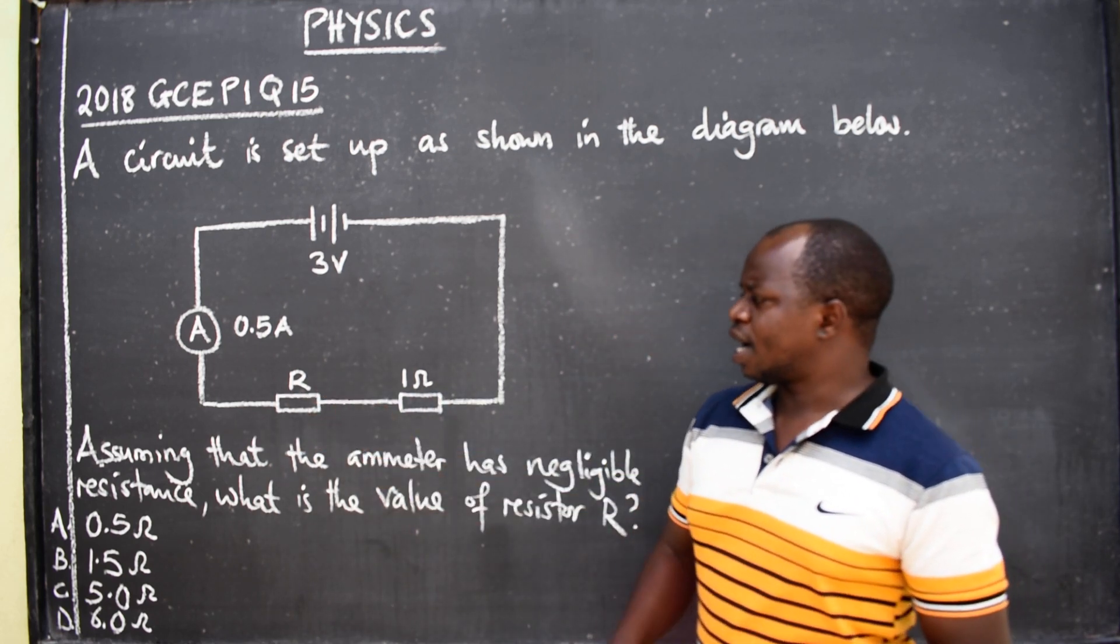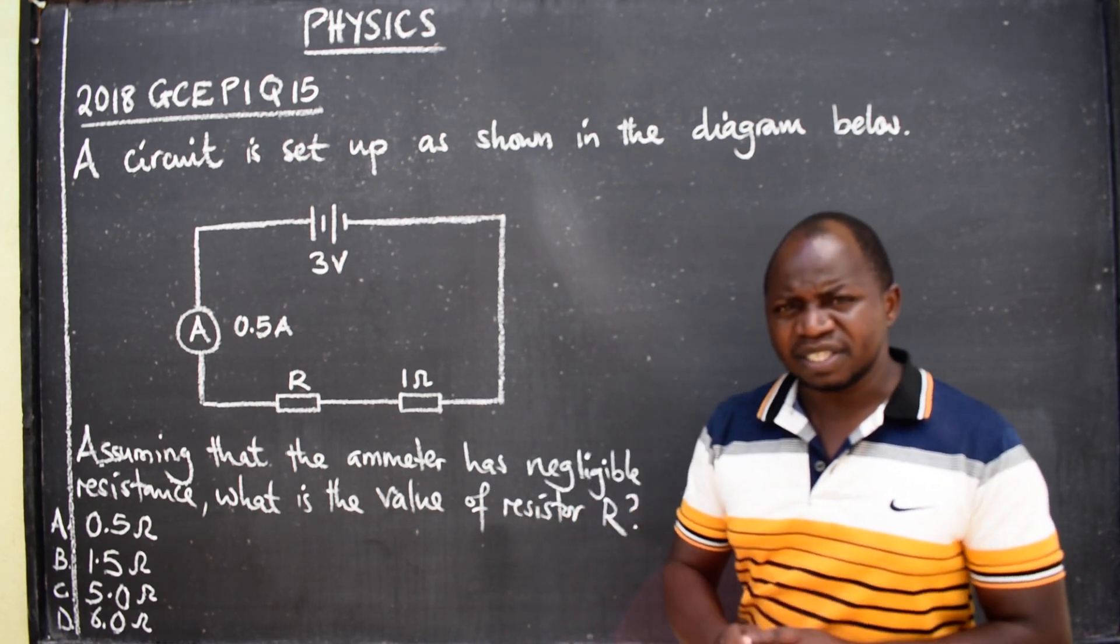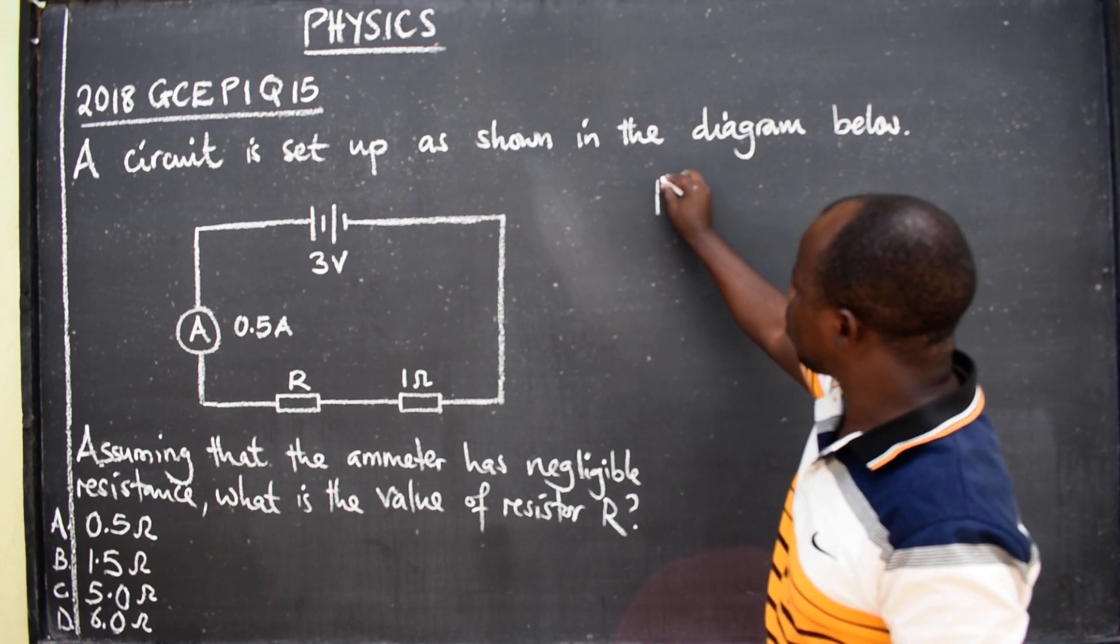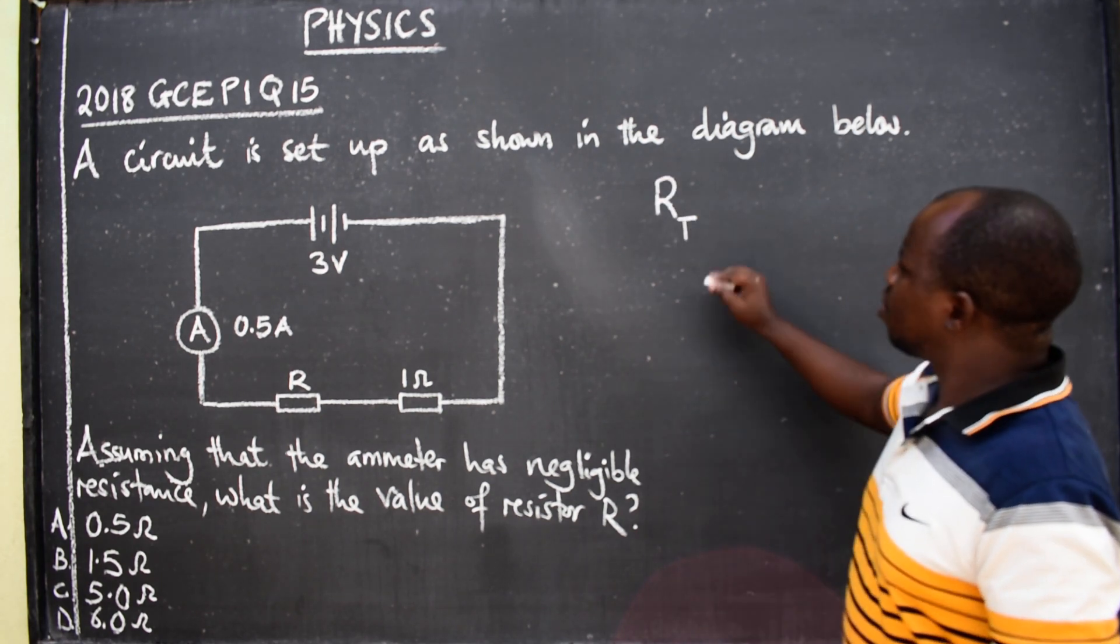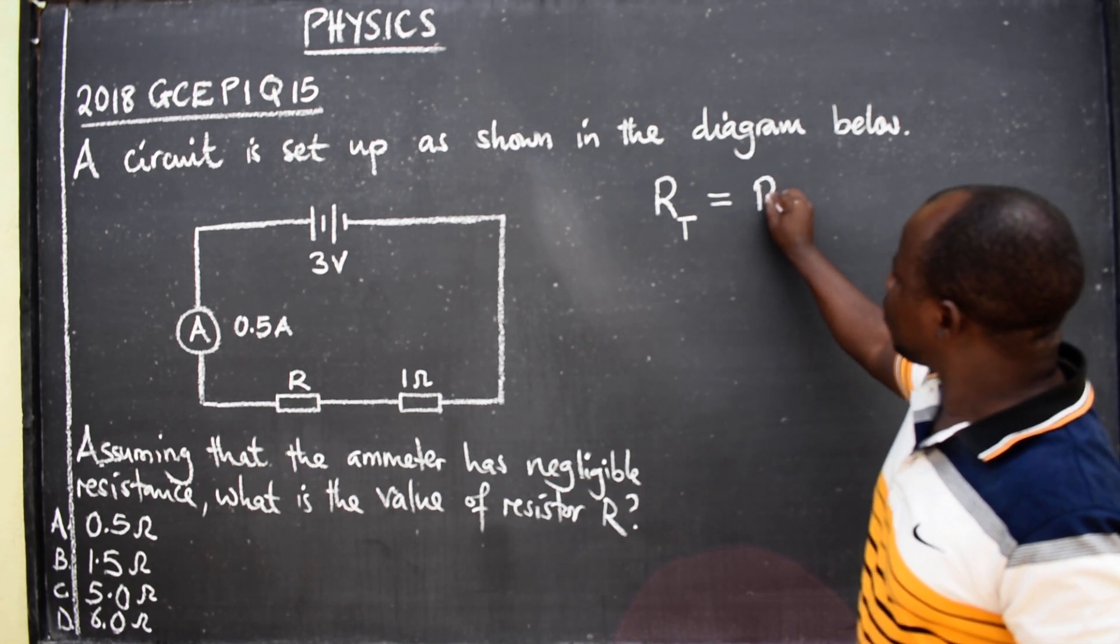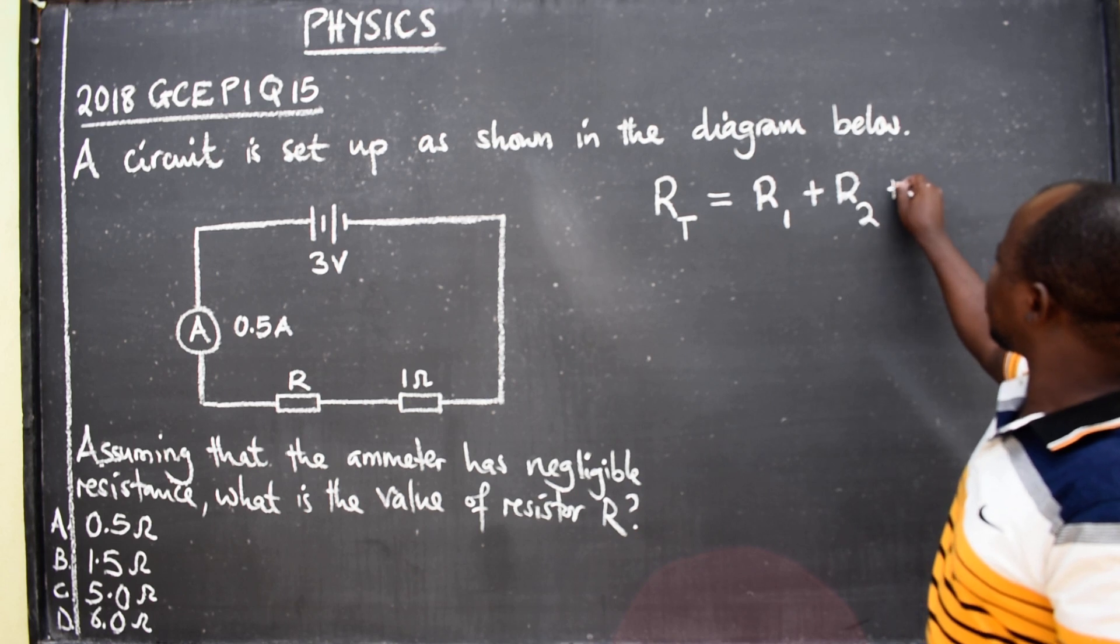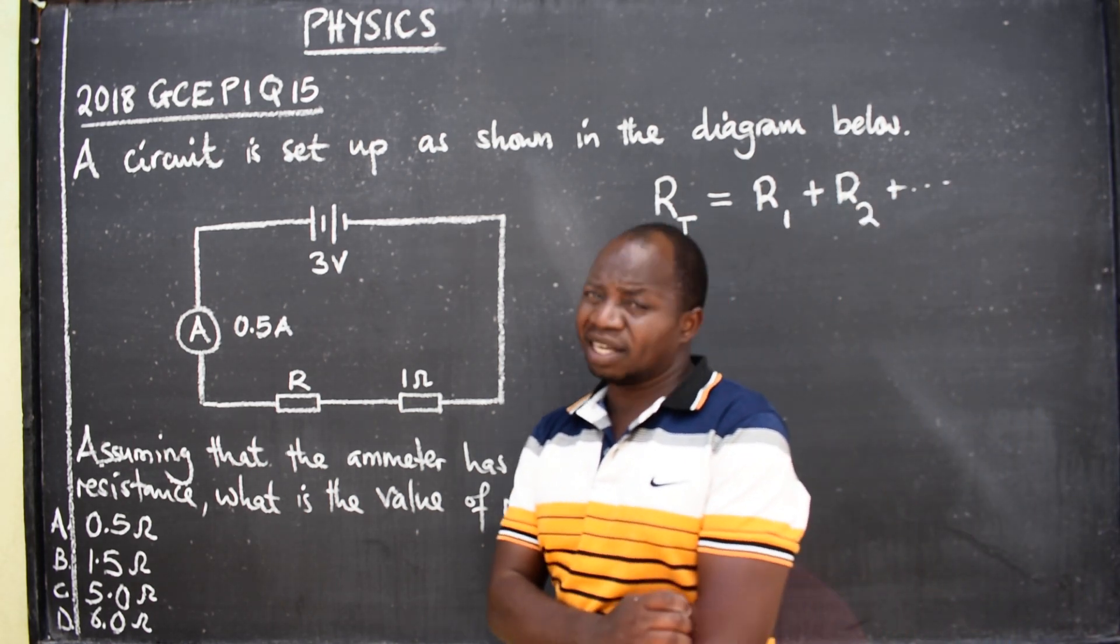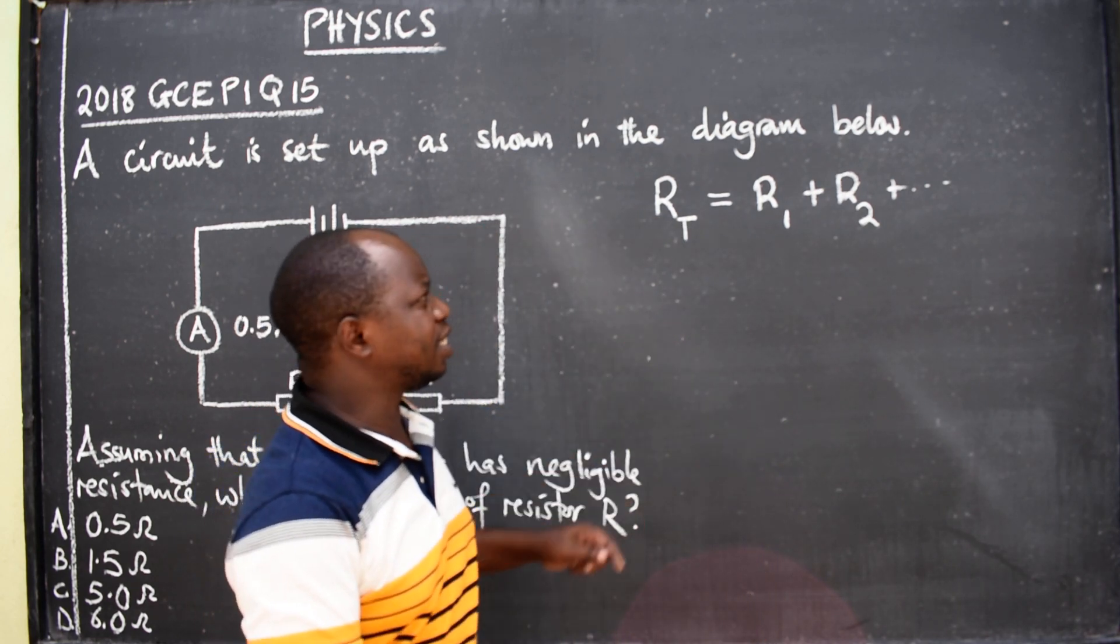So if resistors are connected in series, therefore total resistance will be equal to resistor 1 plus resistor 2 plus it goes on, depending on the number of resistors. That is the way we find the total resistance if they are connected in series.